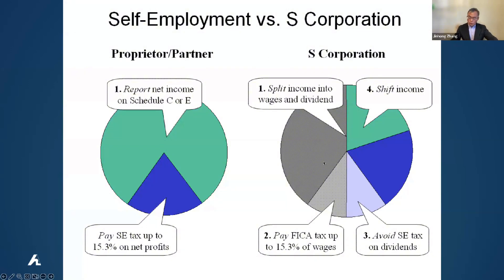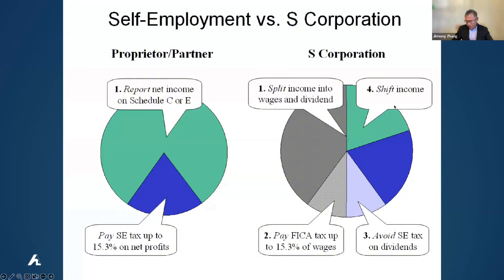The way we do it is we create an S-Corp and then we separate this hundred thousand dollars into two parts: fifty thousand dollar salary and fifty thousand dollars K-1. So now we pay fifty thousand dollars times fifteen percent — that's a seven thousand five hundred dollar self-employment tax. So we save seven thousand five hundred dollars immediately just by using this strategy.